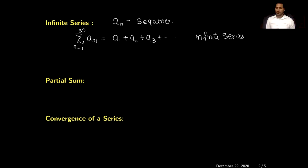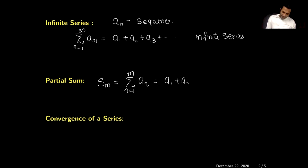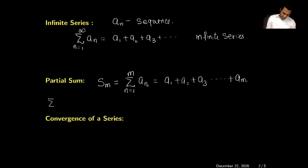Our next definition is the partial sum, usually denoted by S_m. It is the sum of the first m terms of the series: a1 + a2 + a3 + ... + a_m. For example, if we have the series sum of 1/n where n varies from 1 to infinity, this is the famous harmonic series.